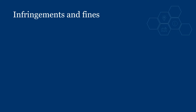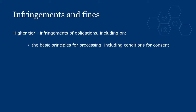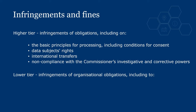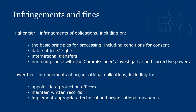Article 83 outlines the conditions for imposing administrative fines. There are two tiers. The higher tier concerns infringements around the basic principles for processing including conditions for consent, data subjects' rights, international transfers, and non-compliance with the Commissioner's investigative and corrective powers. The lower tier infringements are mainly concerned with failure to meet organisational obligations — for example, to appoint data protection officers, maintain written records, implement technical and organisational measures to ensure security of processing, and report breaches where required. Note: the higher tier infringements focus on the individual, while the lower tier focuses on organisational obligations.